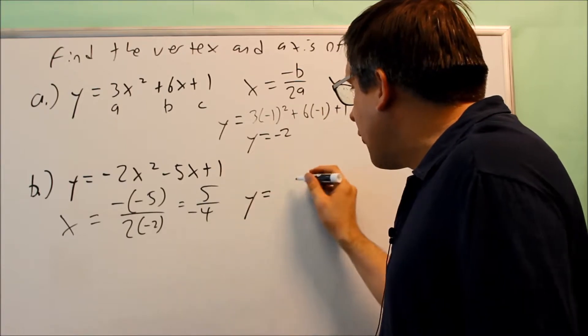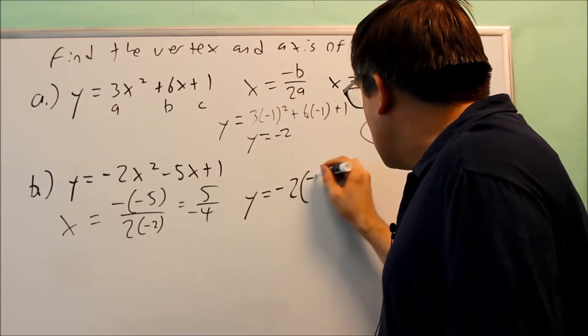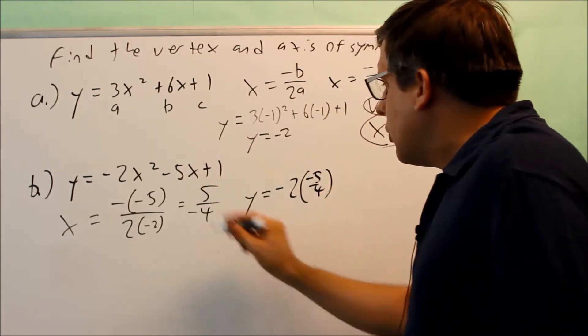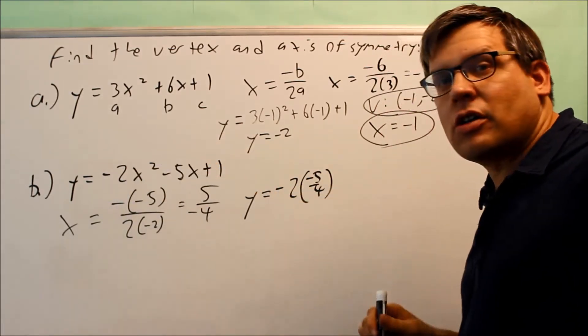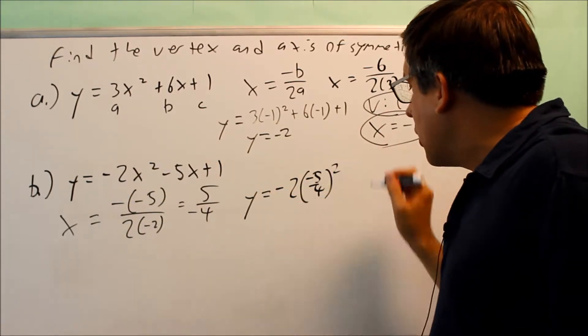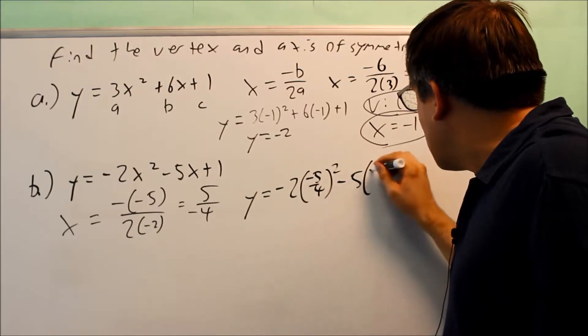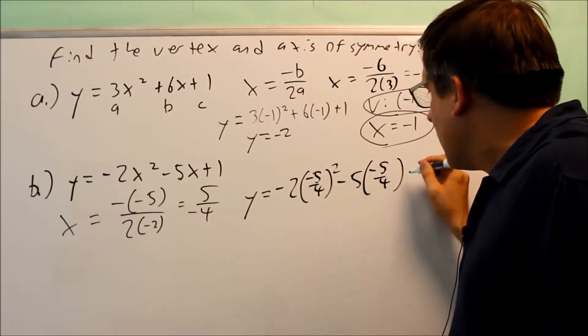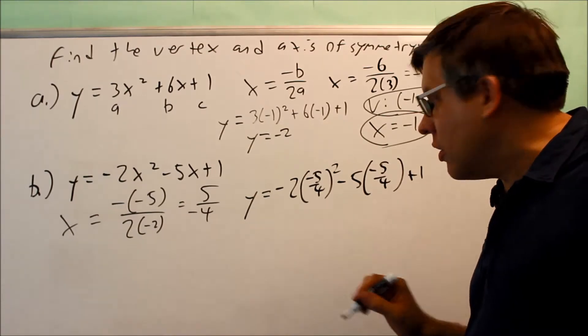Now we want to find the y value. You're going to put negative 5 fourths into the equation right here in place of x. You put it in there to get the y value. Don't forget to square that one. Minus 5 times negative 5 over 4 plus 1. So now we have some fractions that we have to work out here.